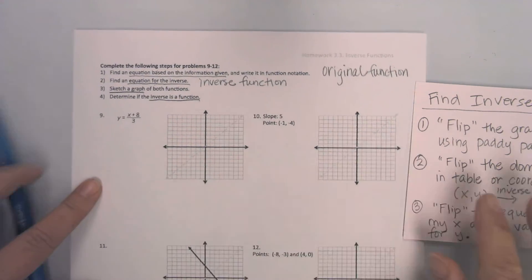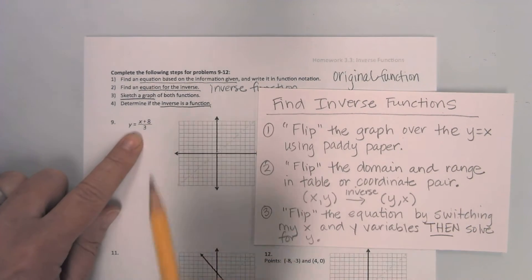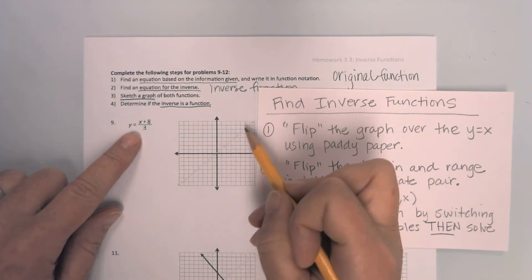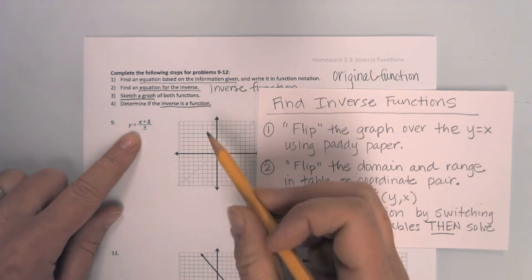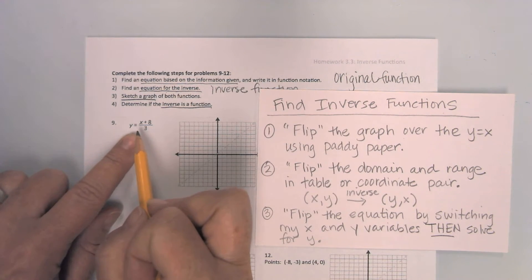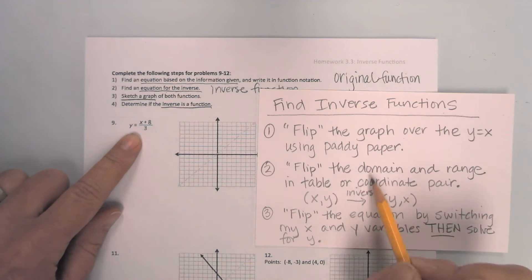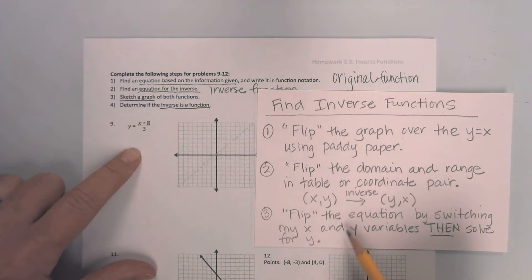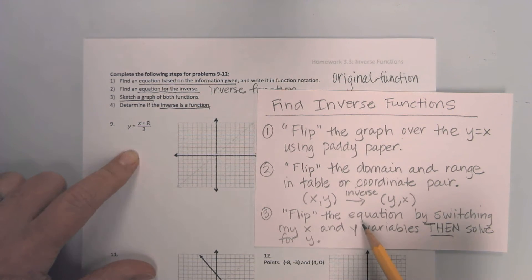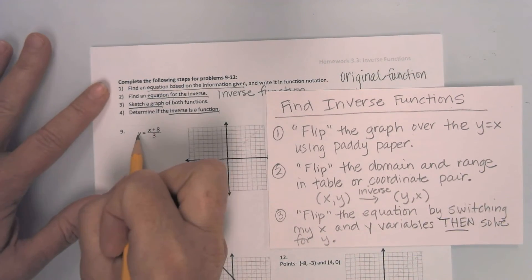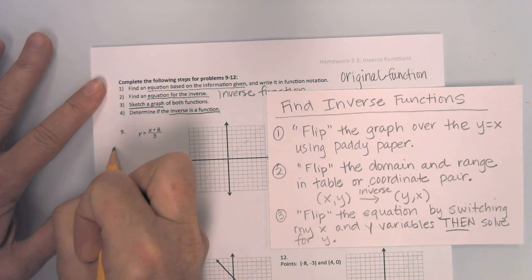Let's go ahead and take a look at our first one. I notice in my first one I have nothing on the graph yet. The y equals x is sketched in just in case we need it, but I do have an equation. I have two choices: I can make a table with a domain and range, or I can flip the equation first. I think I'm going to flip the equation first — I'm going to take my y and my x and flip them.